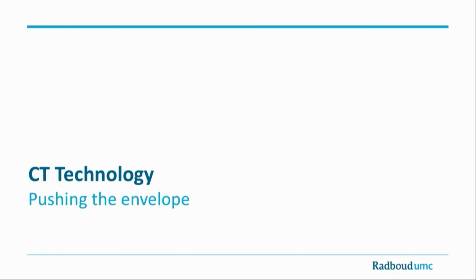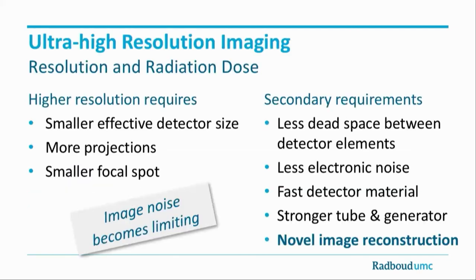Now let me go to something completely different: CT technology, and how it is pushed forward by artificial intelligence, especially for higher spatial resolution. To achieve that, you need smaller detector sizes, more projections, and a smaller focal spot. All of these create image noise, which becomes limiting. So you reduce noise by reducing dead space between detector elements, reducing electronic noise, getting better detector materials, and a stronger tube. But most importantly, you need novel image reconstruction techniques.